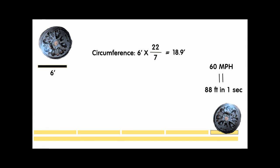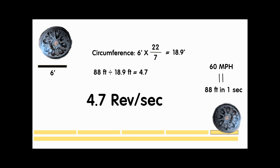88 feet divided by 18.9 feet is 4.7. Therefore, at 60 miles per hour, the CANPAC wheels revolve at around 4.7 times a second.